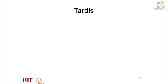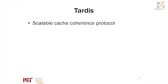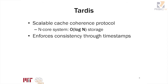TARDIS is a new scalable cache coherence protocol. One of the things it does is track consistency through timestamps in a way that scales in O(log n) fashion for an n-core system. One of the key ideas of TARDIS is that it implements this with logical leases.